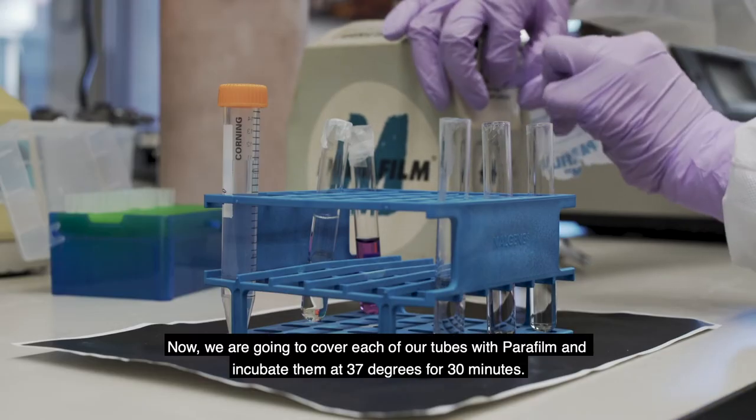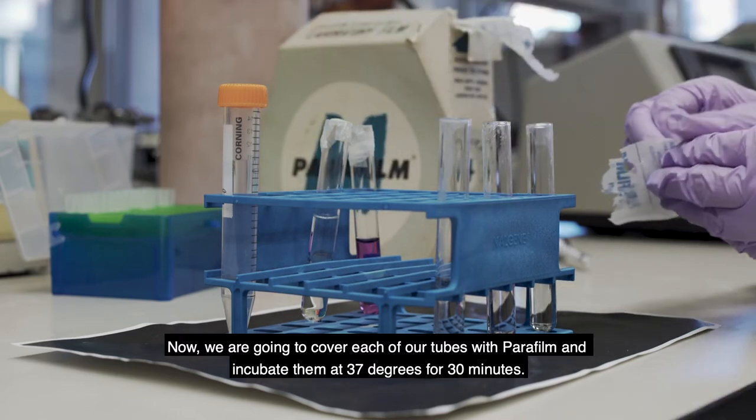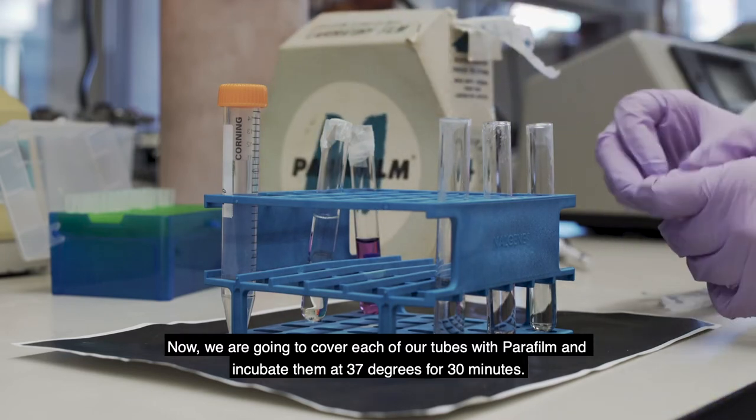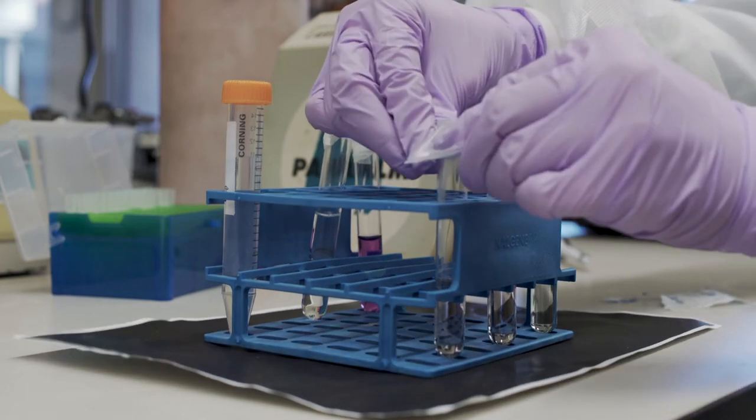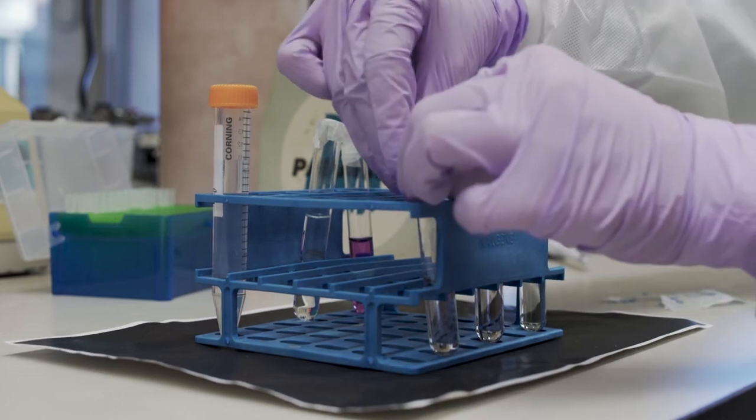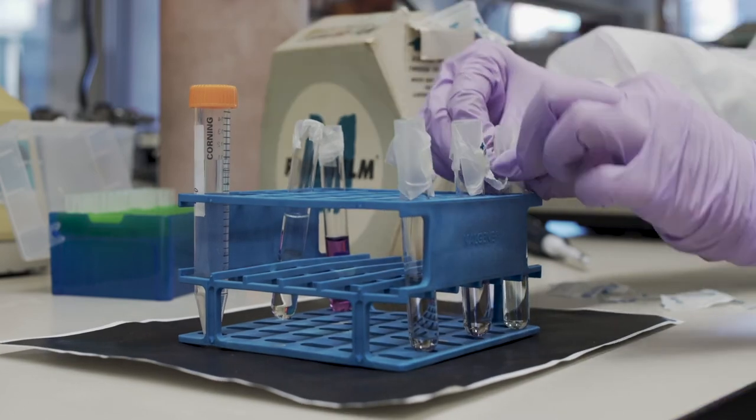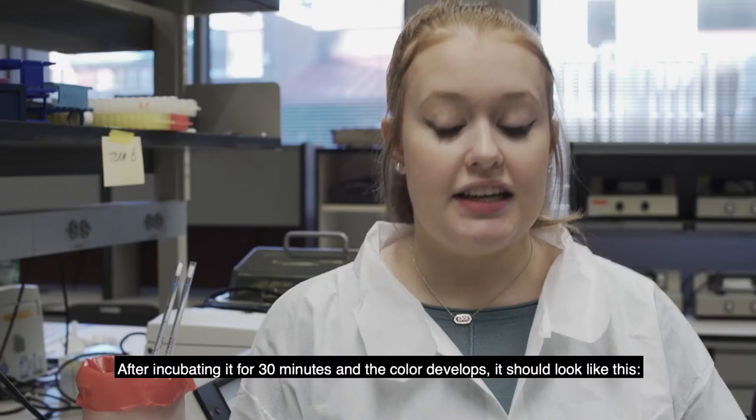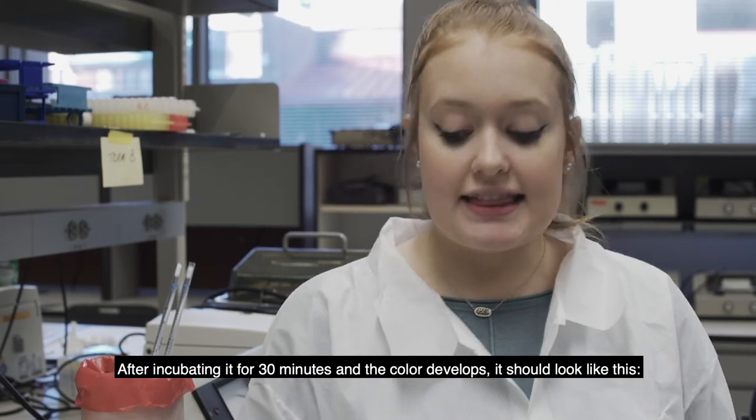Now we're going to cover each of our tubes with parafilm and then incubate them at 37 degrees for 30 minutes. So after incubating it for 30 minutes and the color develops, it should look like this.